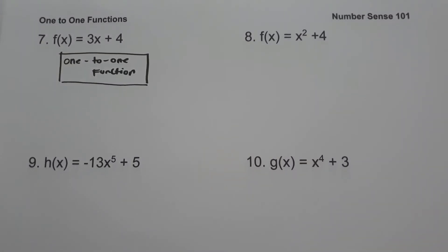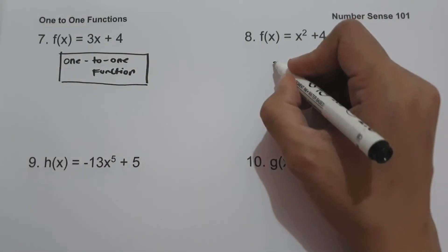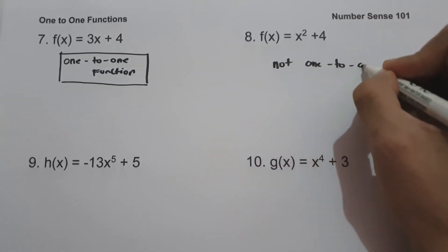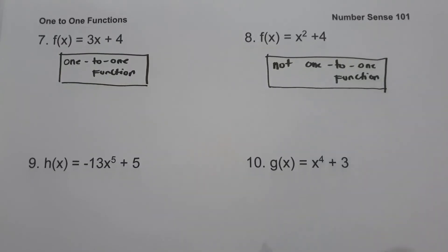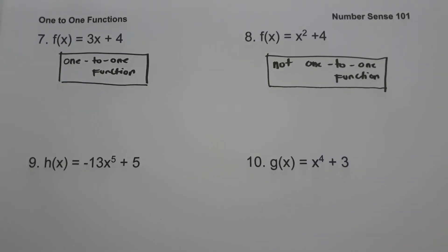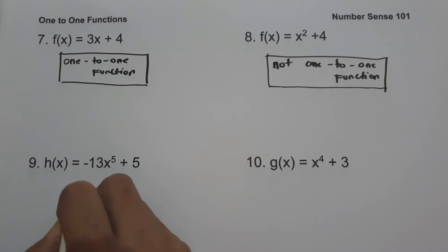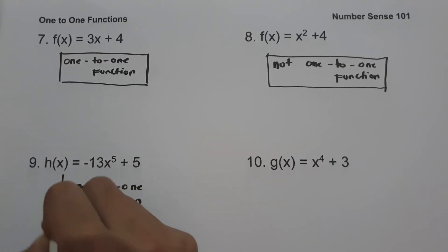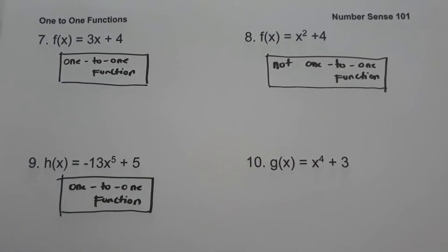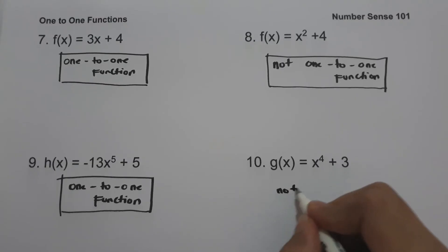On number eight, we have f(x) = x² + 4. Since the highest exponent is even, this function is not one-to-one. On example number nine, we have h(x) = -13x⁵ + 5. Since the highest exponent is 5, an odd number, this is a one-to-one function. On example number ten, g(x) = x⁴ + 3. Since the highest exponent is 4, an even number, this is not a one-to-one function.